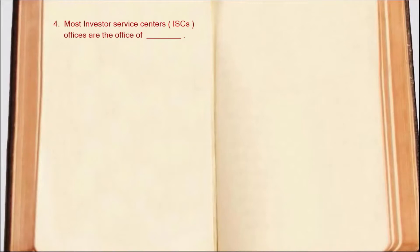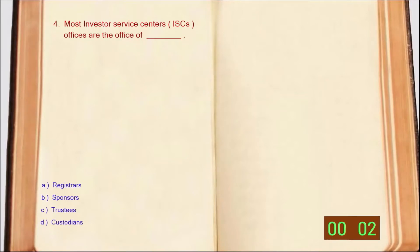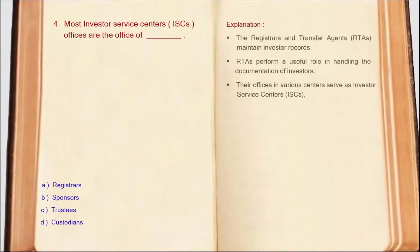Next question: Most investor service centers are the offices of DASH. RTS (Registrar and Transfer Agencies) handles investors' documentation and maintains investors' records. RTS offices act as investor service centers. So the correct answer is Option A: Registrar.